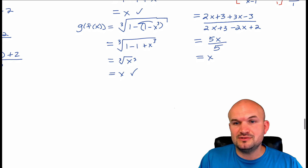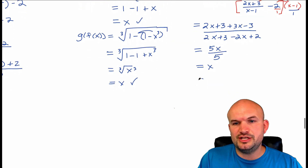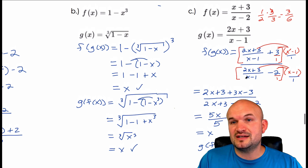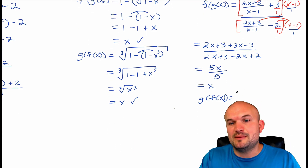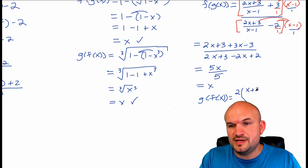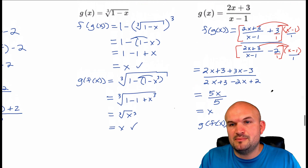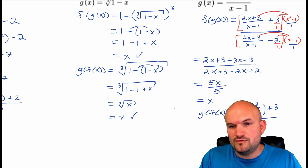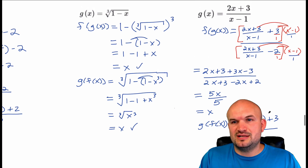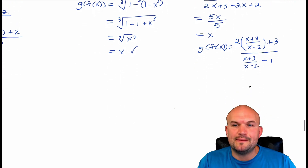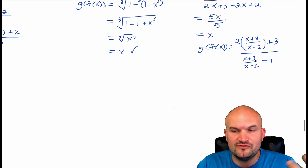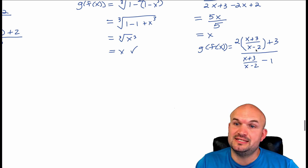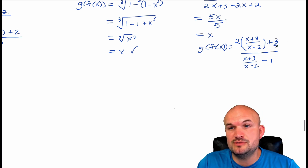Now let's do g of f of x. I'm going to plug the f of x function, which is x plus 3 over x minus 2. I want to use parentheses here because there's multiplication involved. So it's 2 times x plus 3 over x minus 2, over x plus 3 over x minus 2 minus 1. We have a different common denominator now — the common denominator of all my terms is x minus 2. I'll apply the same process and multiply everything times x minus 2 on top and bottom.